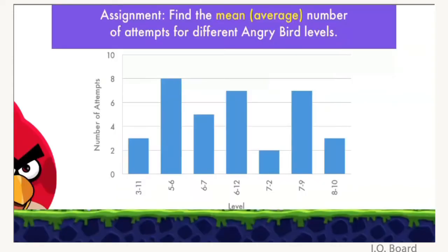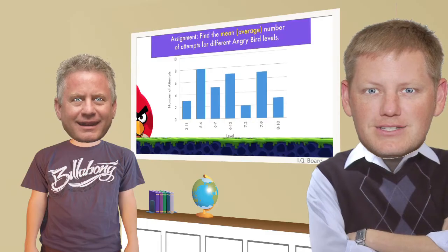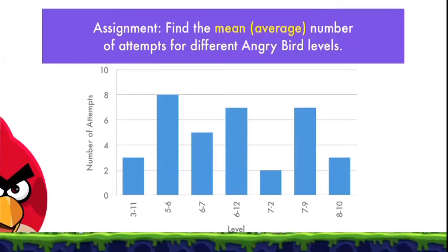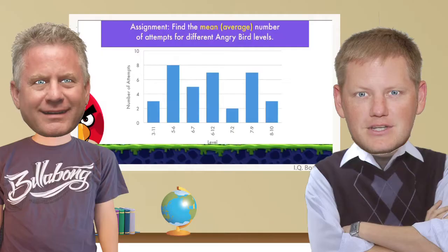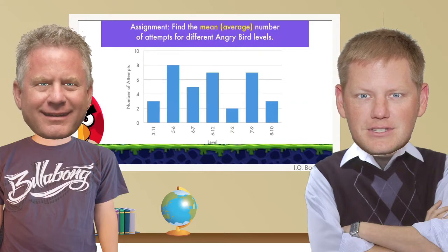So here's our assignment. I want the students to be able to do this: find the mean, or the average number of attempts. It kind of goes with mean and Angry Birds — a red bird is a mean bird, Mr. Ruff. So find the mean or the average number of attempts for different levels on Angry Birds. Here I have a bar graph with the different levels on the bottom and the number of attempts it took me to pass each one.